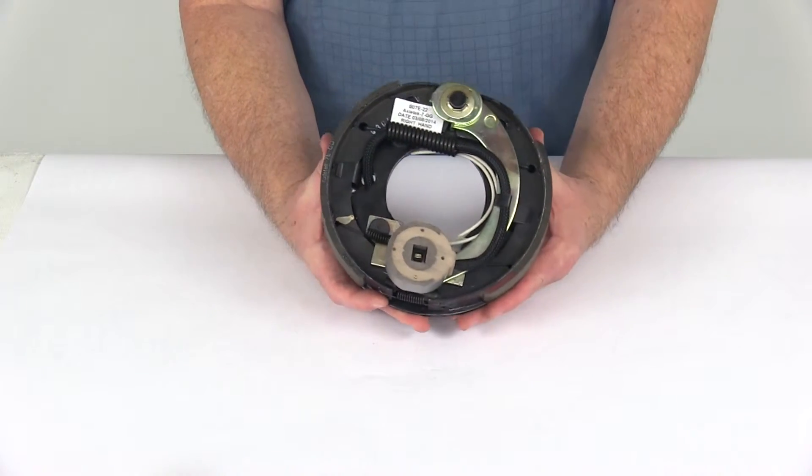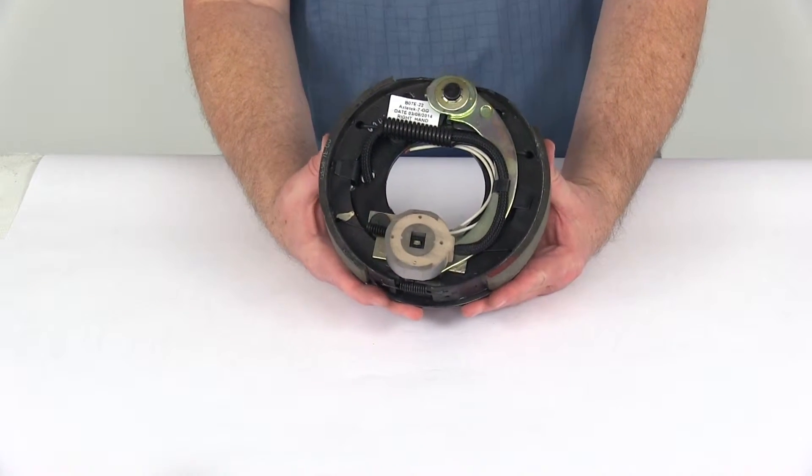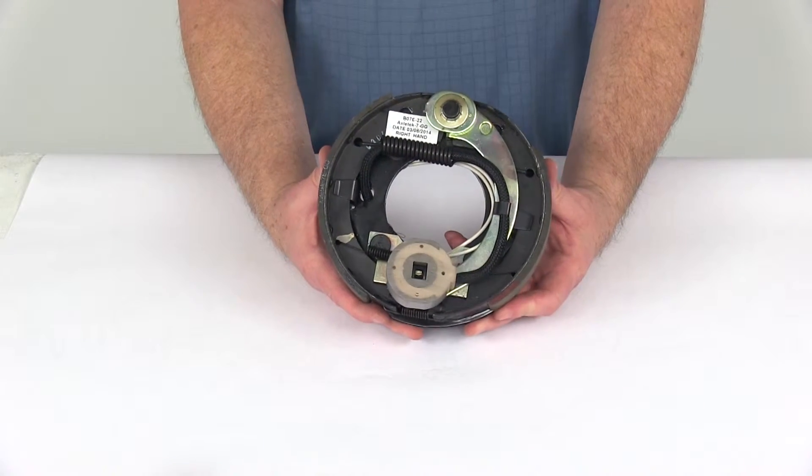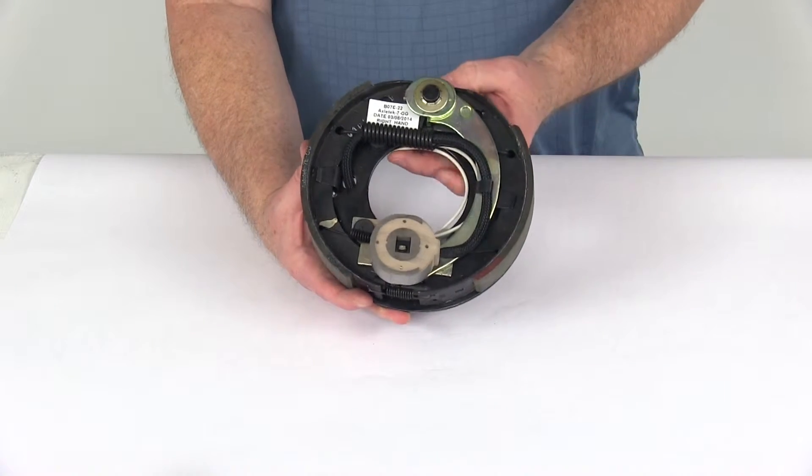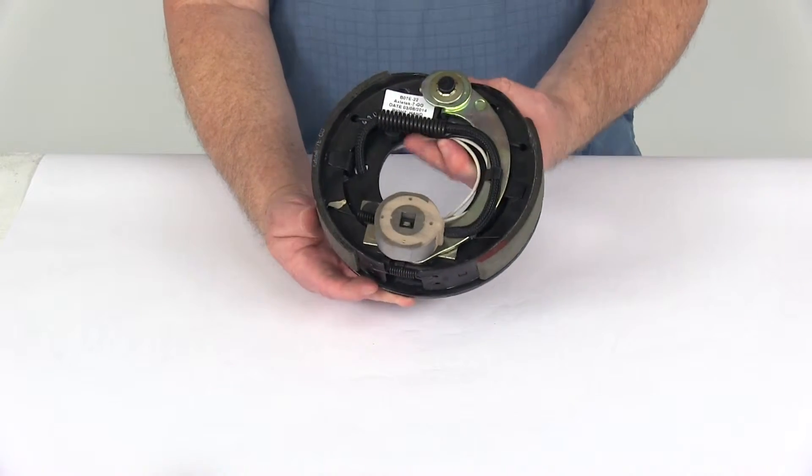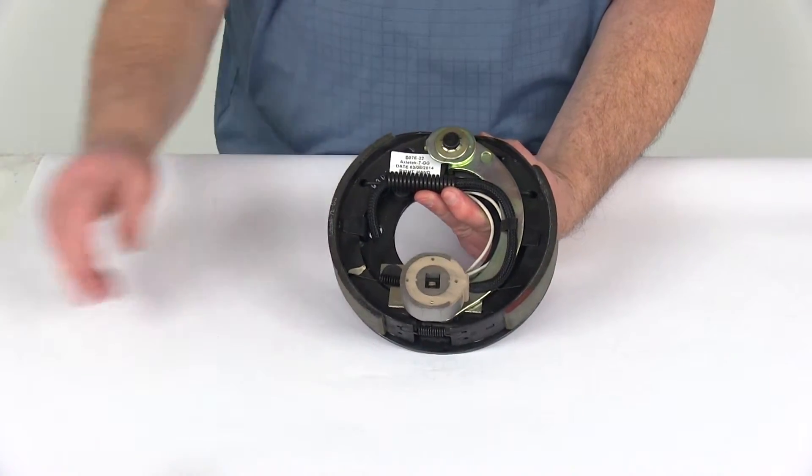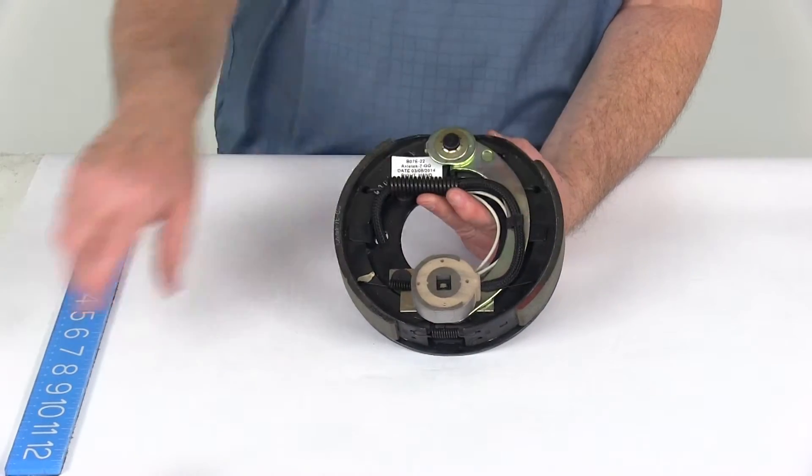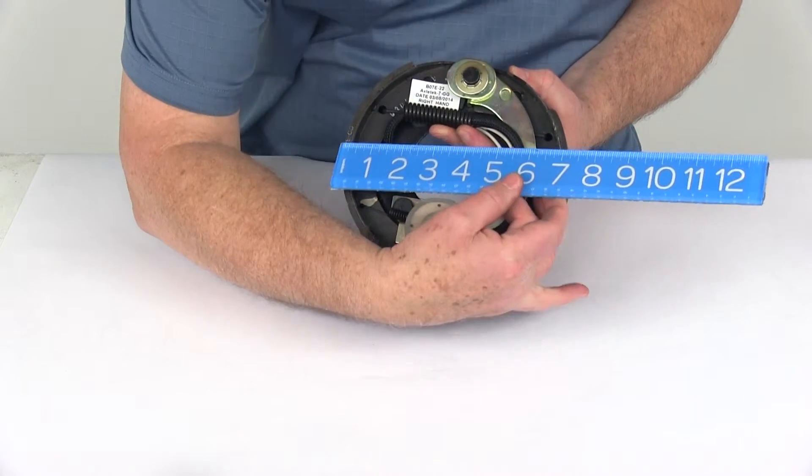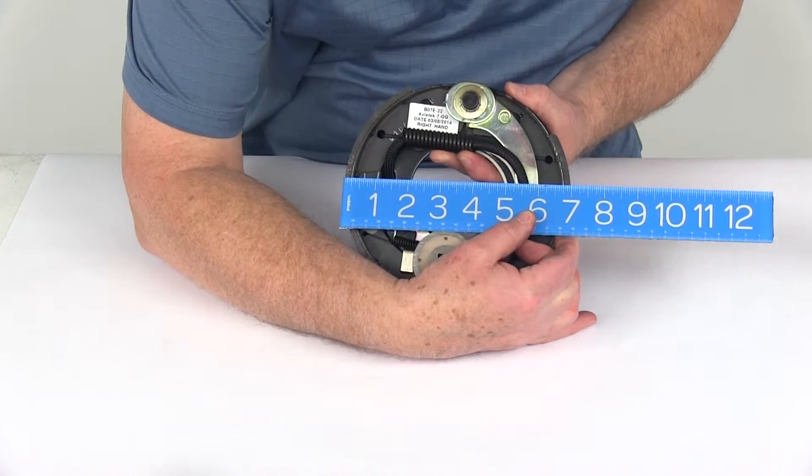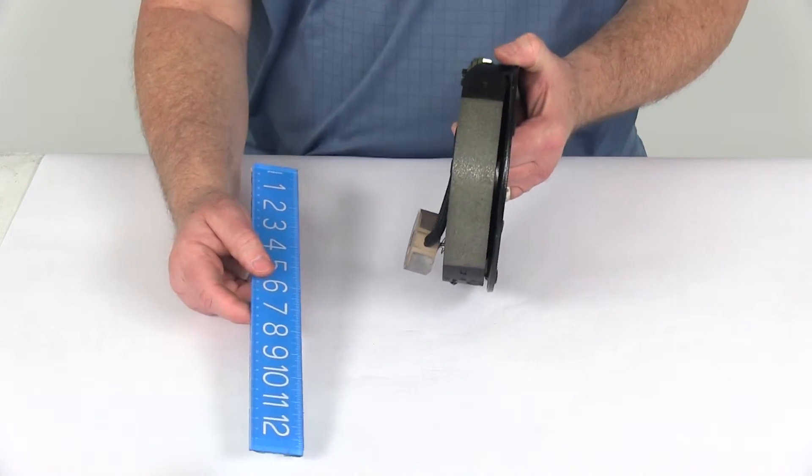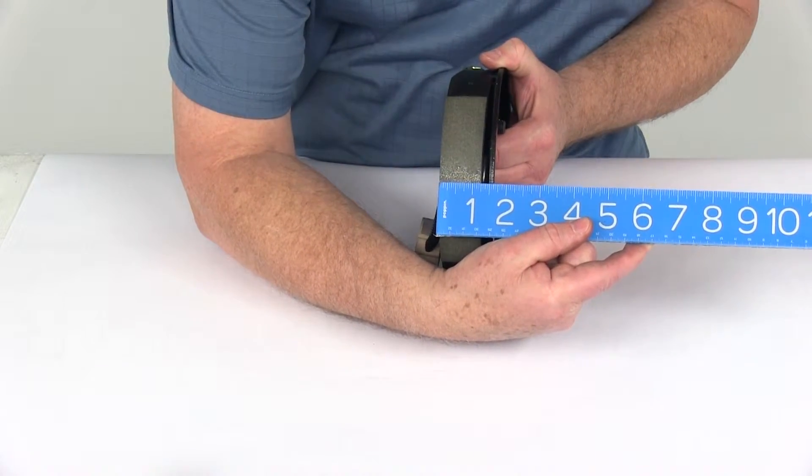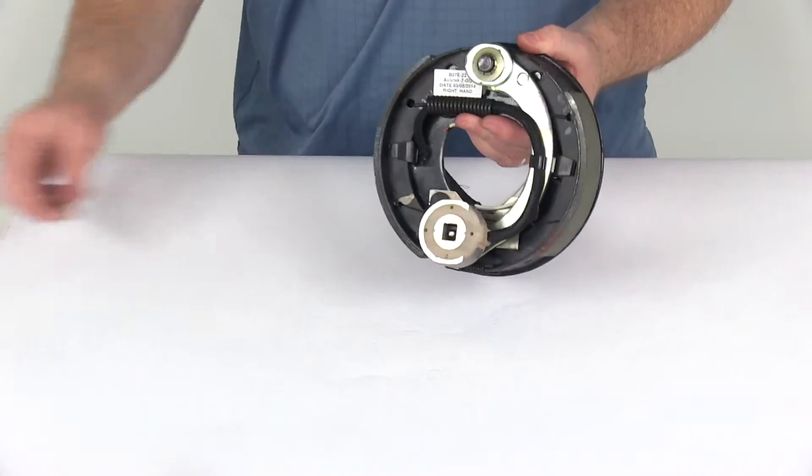This brake assembly is certified for QAI, which is Quality Assurance International, and CSA, which is the Canadian Standards Association. This is a 7 by 1 1/4 inch brake assembly. Seven inches is the diameter measuring outside to outside, edge to edge. And 1 1/4 inch means the width of the brake pad.